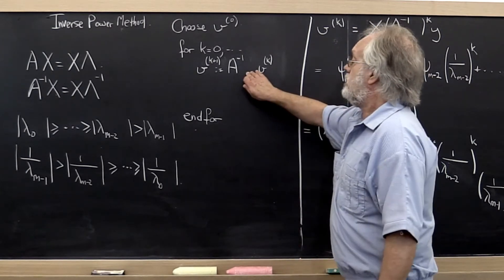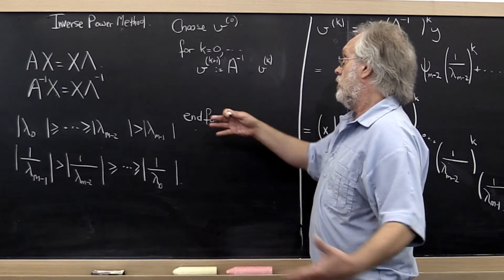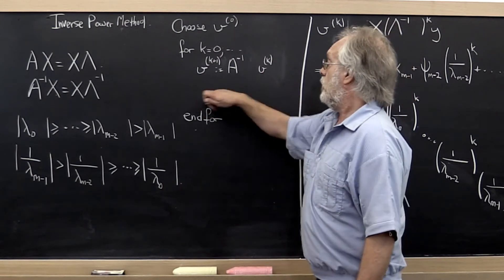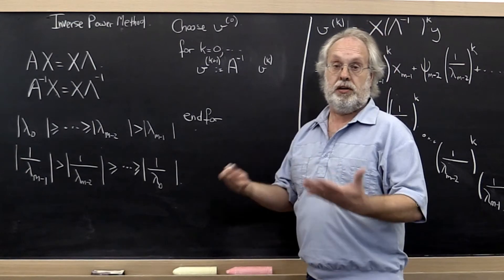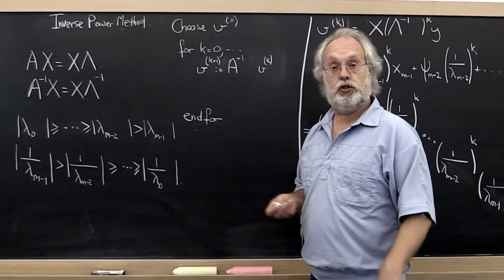And then obviously in order to keep this vector from either getting too long or too short, we would want to scale it again to keep its length, for example, equal to 1.